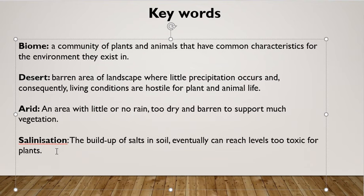The final key word is salinization, which often occurs in deserts. Salinization is when salt builds up in soil. When salt builds up too much it can become toxic — a bit like if you put too much salt on your dinner, it becomes too toxic to eat. So if there's too much salt in soil, it will eventually reach toxic levels that are too toxic for plants.